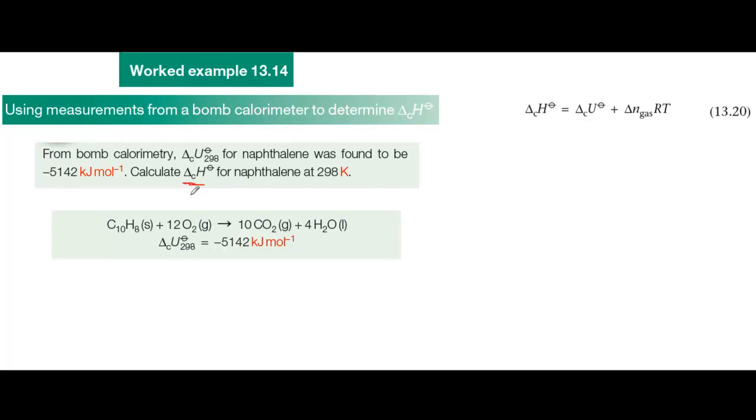A much more accurate method uses a bomb calorimeter, like the one shown in figure 13.17. A bomb calorimeter is a closed system in which reactions take place at constant volume. No expansion work can occur and all the energy change appears as heat and what you're measuring is delta U rather than delta H.